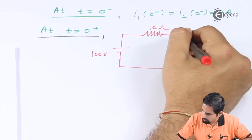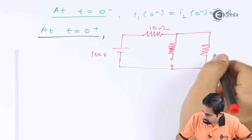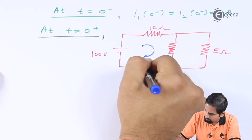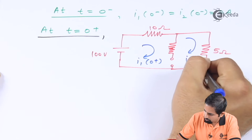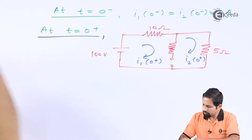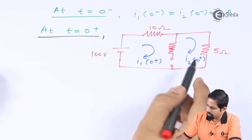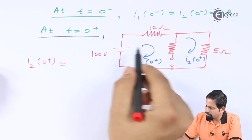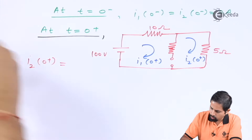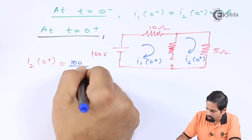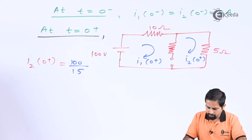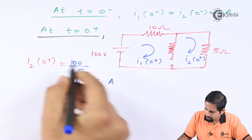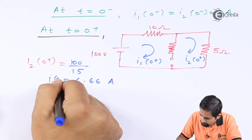And here there is a 5 ohm resistor. I1 and I2 are drawn as shown. I1(0 plus) will be 0 because of the open circuit. But I2(0 plus) can be calculated: it is voltage over resistance, which is 100 volts divided by (10 + 5) = 15 ohms, giving 100/15 = 6.66 amperes.